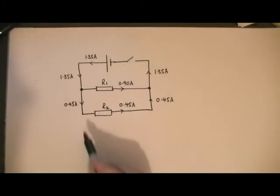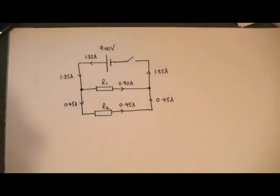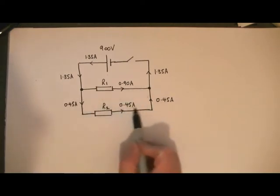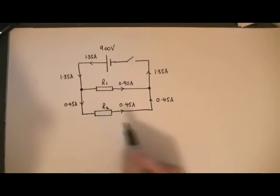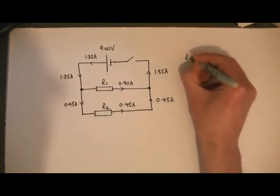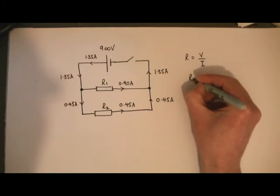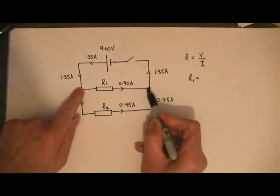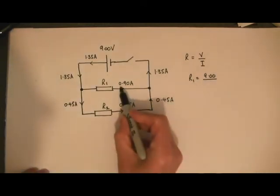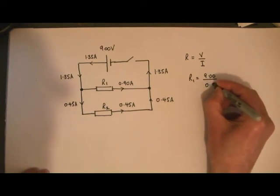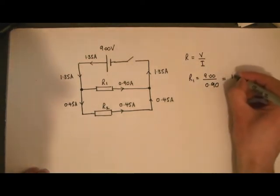Here's the parallel circuit showing the currents that are flowing, and we also know that the battery is a 9 volt battery. We're going to try and explain why these currents are different. To do that, we need to work out the values of R1 and R2. We know that resistance R equals voltage V divided by current I. So R1 must equal the voltage across that branch — which is the same as the battery voltage, 9 volts — divided by the current in that branch, 0.90 amps. So that comes to 10 ohms.